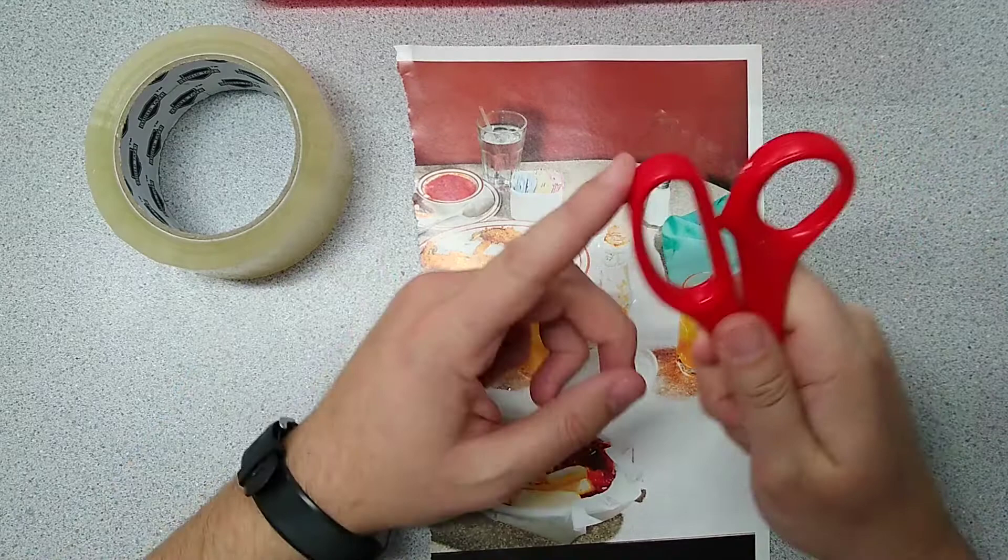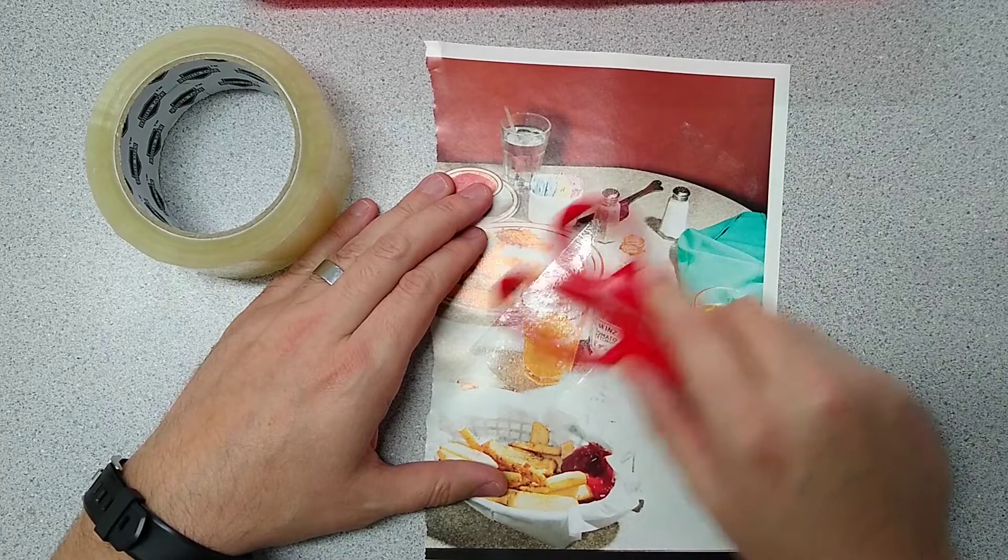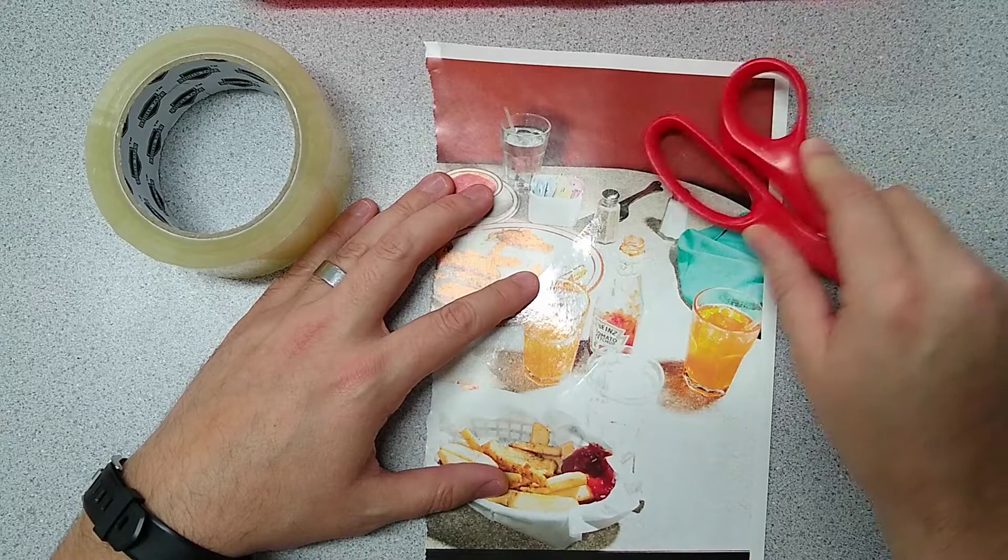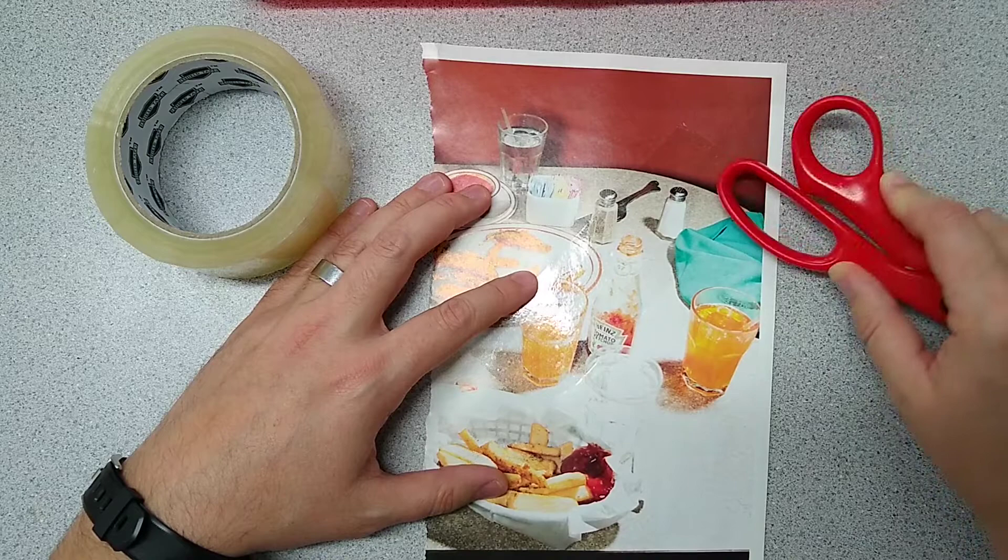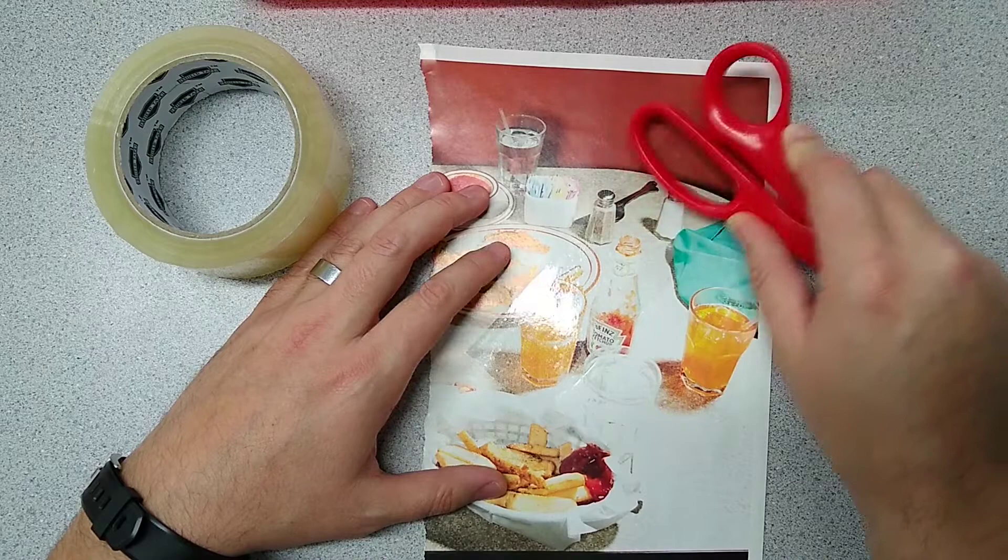I'm going to take the back of my scissors, the smooth part here, and I'm going to go over everywhere that my packing tape is. And if you look closely, you probably won't be able to see it in the video, but if you look closely, you'll see that there are some small bubbles that will disappear when you go over it with the back of the scissors.